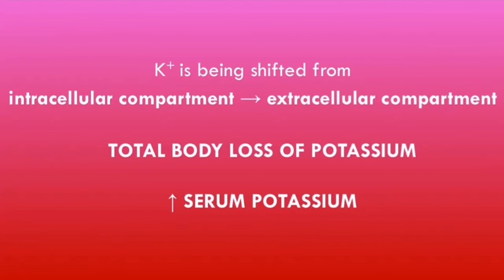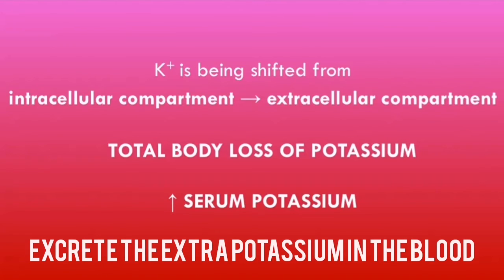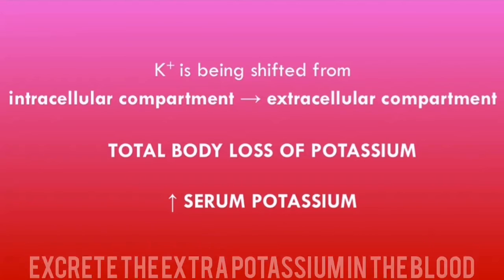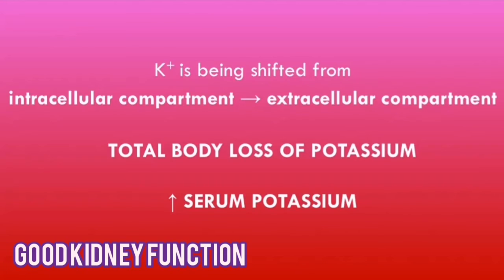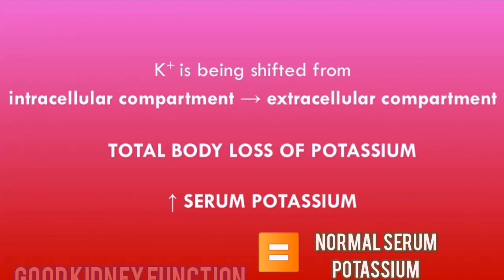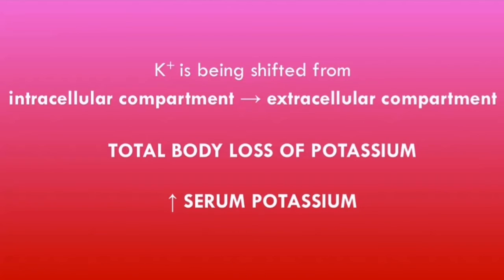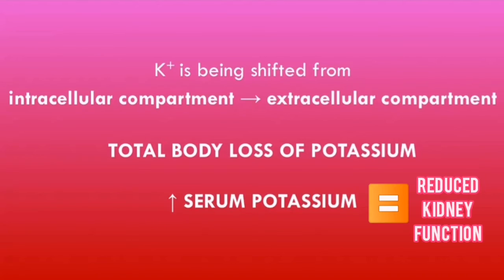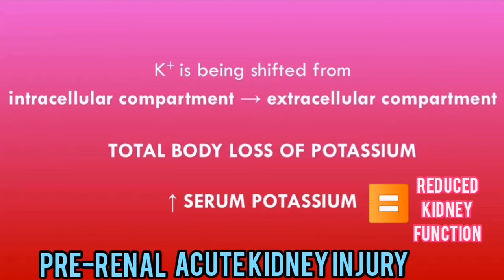If the patient's kidneys are working well, they should be able to excrete the extra potassium in the blood out into the urine, so patients with good kidney function will usually present with normal serum potassium levels. Patients who present with hyperkalemia and high serum potassium levels will usually have reduced kidney function, which typically occurs because patients develop a pre-renal acute kidney injury.